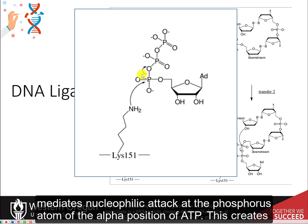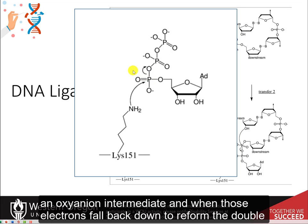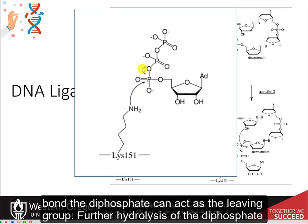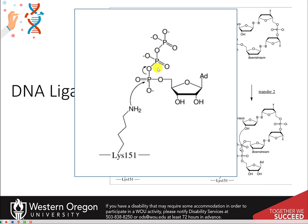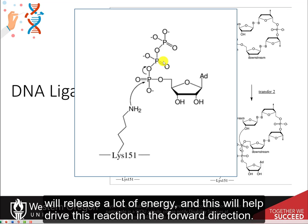This creates an oxyanion intermediate, and when those electrons fall back down to reform the double bond, the diphosphate can act as the leaving group. Further hydrolysis of the diphosphate will release a lot of energy, and this will help drive this reaction in the forward direction.